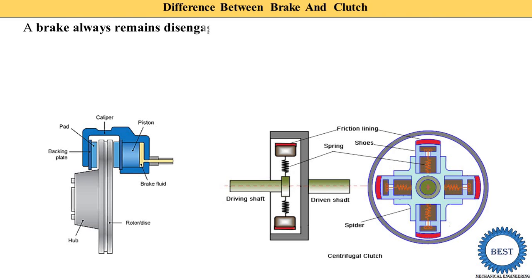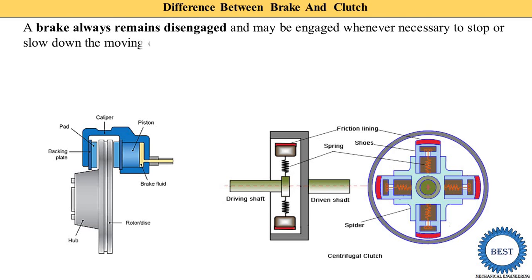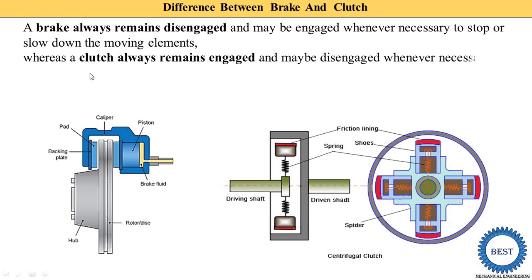The last difference: a brake always remains disengaged. The brake's idle condition is in the disengaged state, and when we need to stop or reduce the speed of the vehicle, we apply the brake — we engage the brake whenever necessary to stop or slow down the moving elements. A clutch always remains in the engaged position and may be disengaged whenever necessary to disconnect the driven shaft from the driving shaft. In our vehicle, the brake is in the disengaged position and the clutch is in the engaged position.